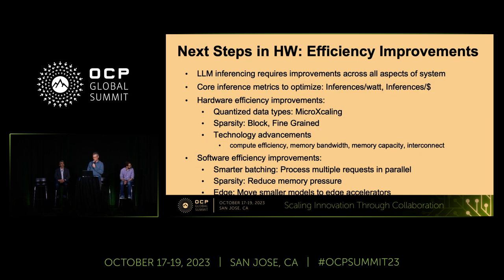For next steps, what do we need to do across the system? We need to be looking for ways to improve both inferences per watt and inferences per dollar through things like microscaling, sparsity, and technology advancements across compute, memory bandwidth, memory capacity, and interconnect. There are also software efficiency improvements we need to look at across batching, sparsity, and in some cases moving smaller models to edge accelerators to free up cloud capacity.